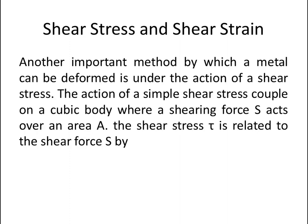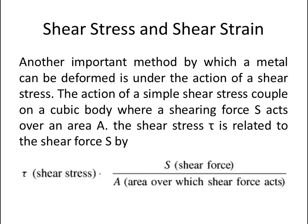Now let's talk about shear stress and shear strain. Another important method by which a metal can be deformed is under the action of a shear stress. Under the action of a simple shear stress couple on a cubic body, a shearing force S acts over an area A. The shear stress tau is related to the shear force S by: shear stress tau equals S divided by A, where S is the shear force and A is the area over which the shear force acts.